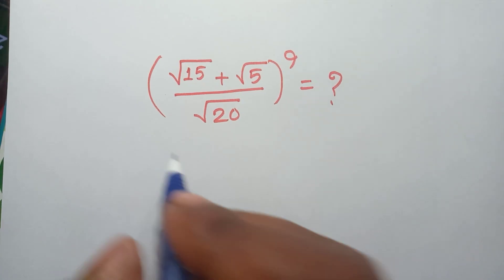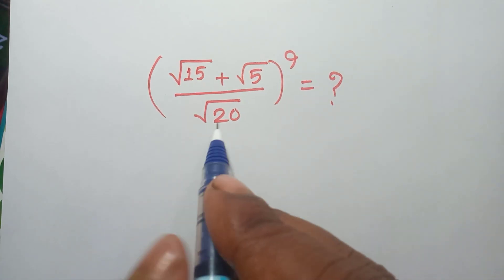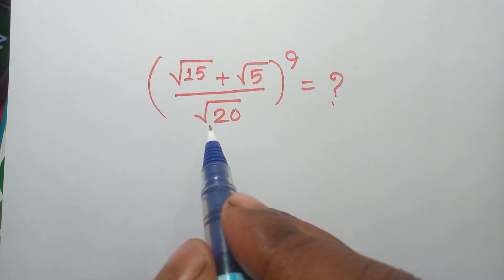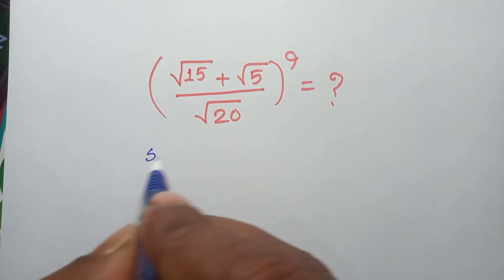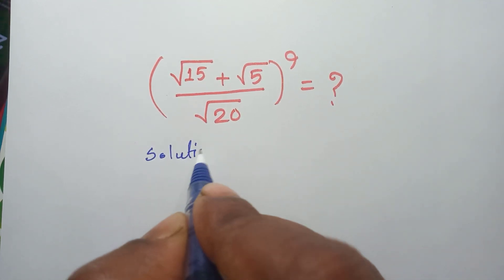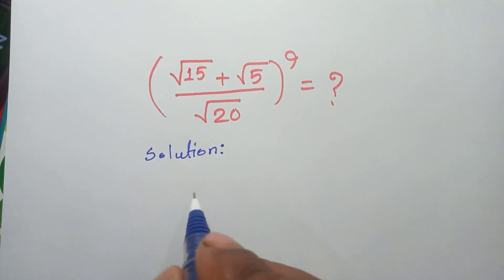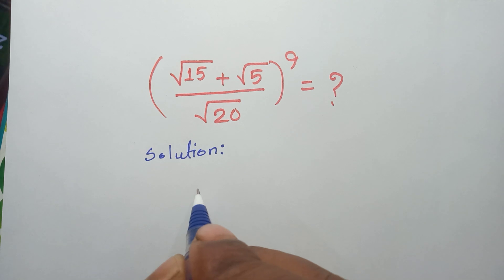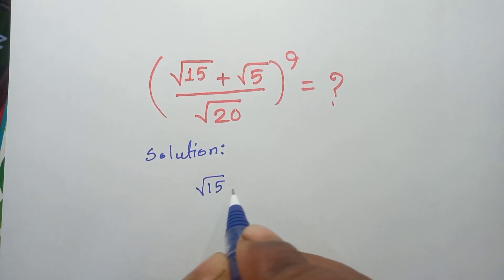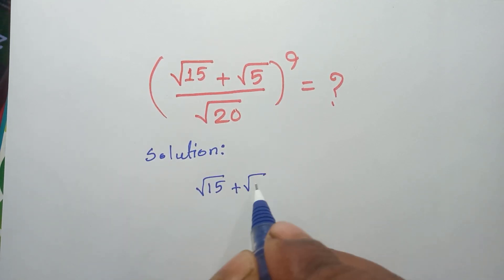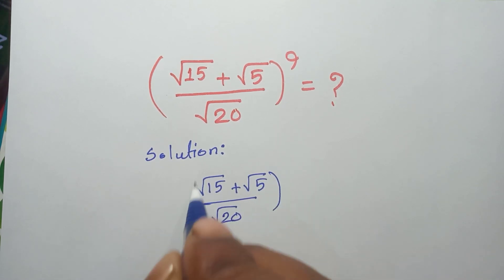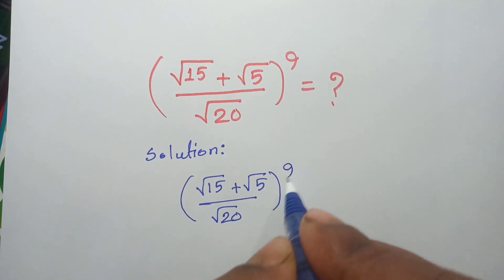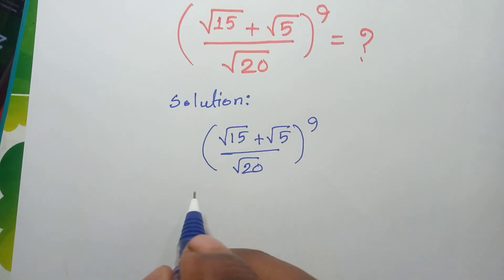Hello everyone, welcome. We have a very interesting math problem to solve. We are given: (√15 + √5) / √20, raised to the power 9. Let's try to find the solution.